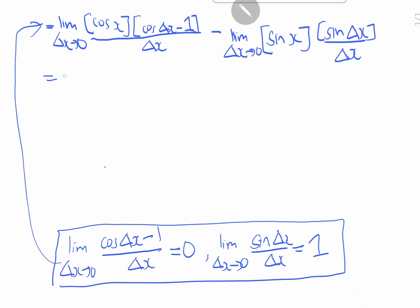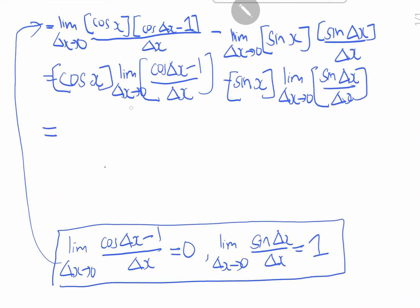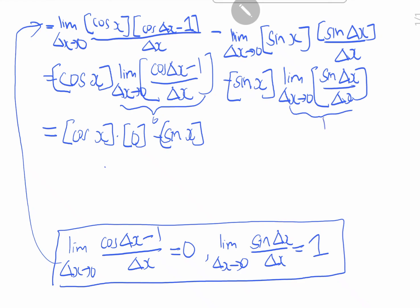So we bring cosine x out, since it has no delta x component: cosine x times the limit as delta x goes to 0 of [cosine(delta x) minus 1] over delta x, minus sine x times the limit as delta x goes to 0 of sine(delta x) over delta x. The first limit gives 0, so we get cosine x times 0, and the second limit gives 1, giving us minus sine x.